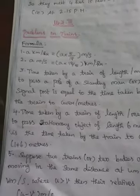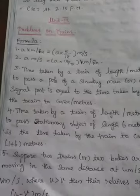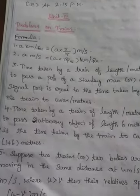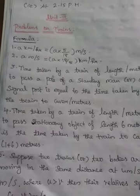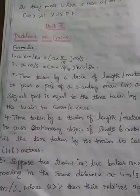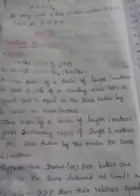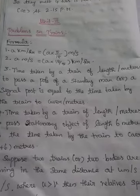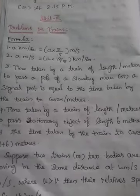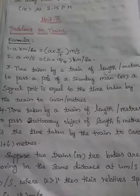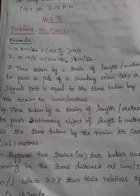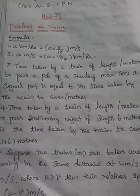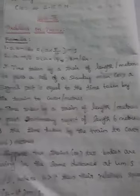Formulas are: first one, a km per hour is equal to a into 5 by 18 meter per second. Second one, a meter per second is equal to a into 18 by 5 km per hour.